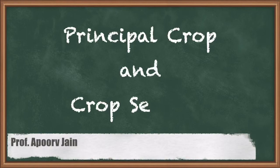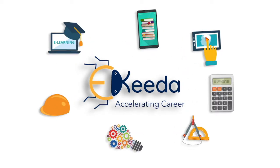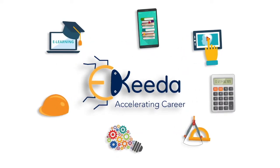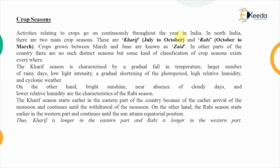In this video we are going to discuss the different crop seasons pertinent in the Indian context and the major crops grown in those seasons. In Northern India, which is the major region for agricultural activities, there are two main crop seasons named the Kharif season and the Rabi season.